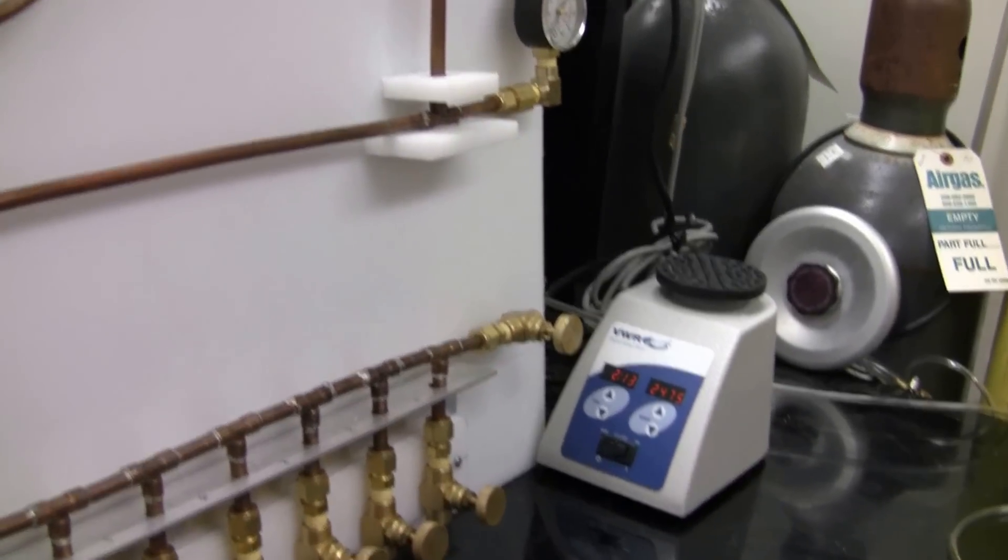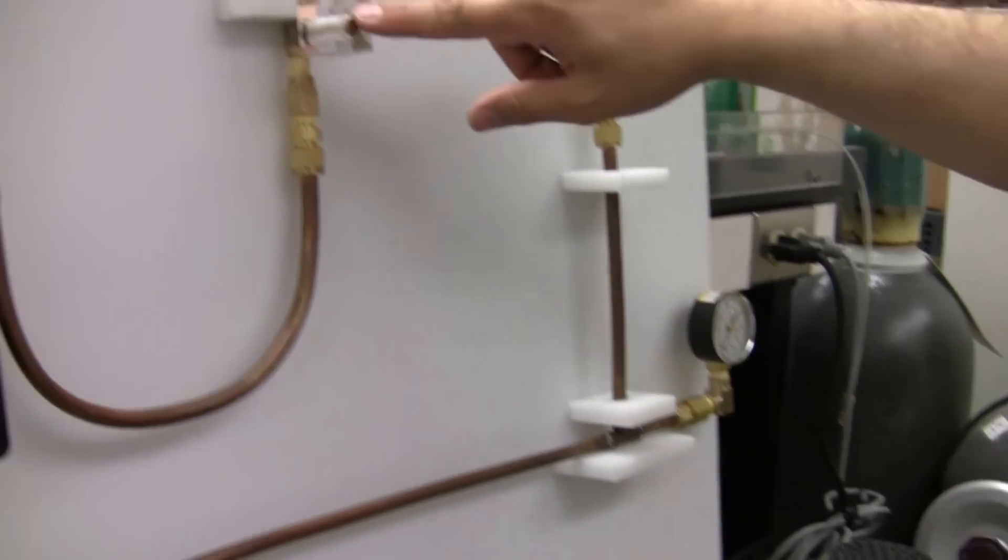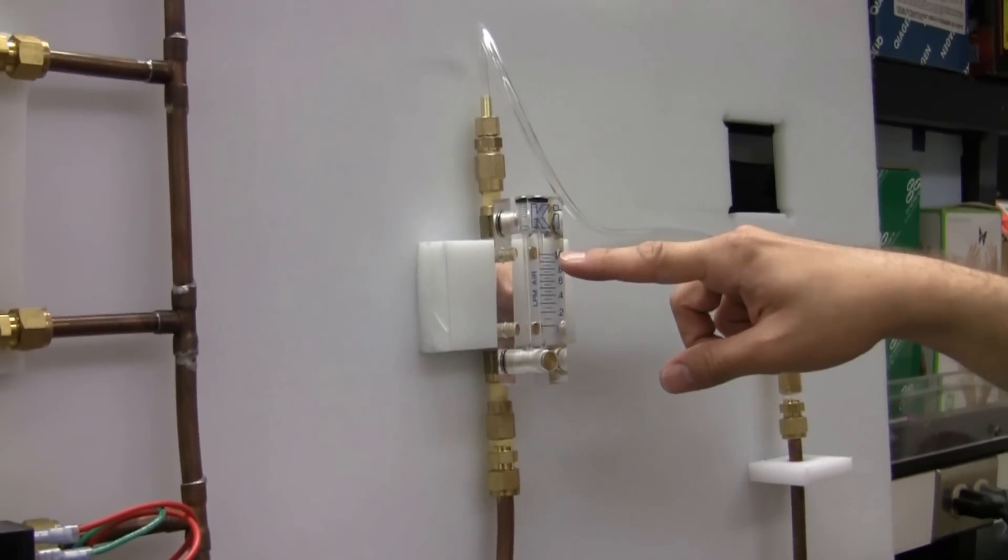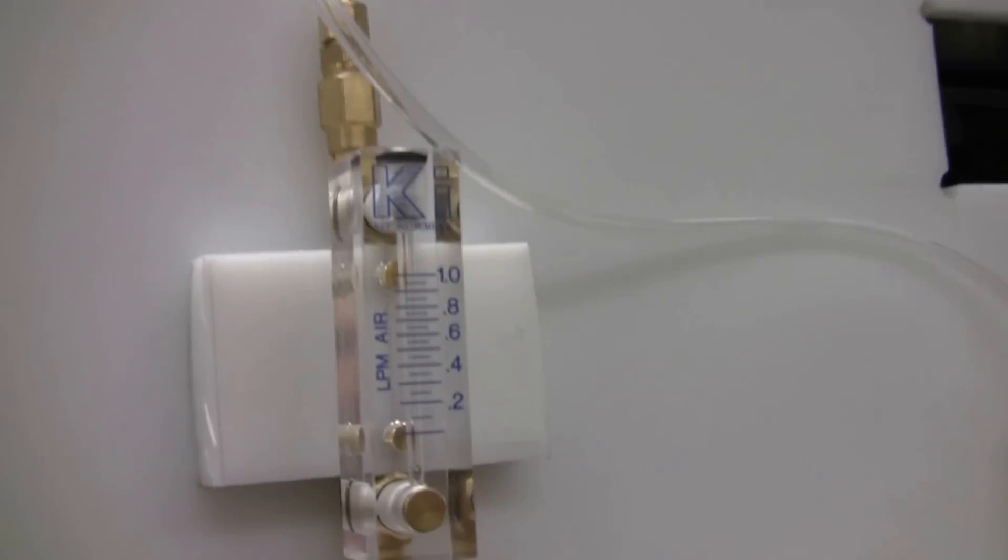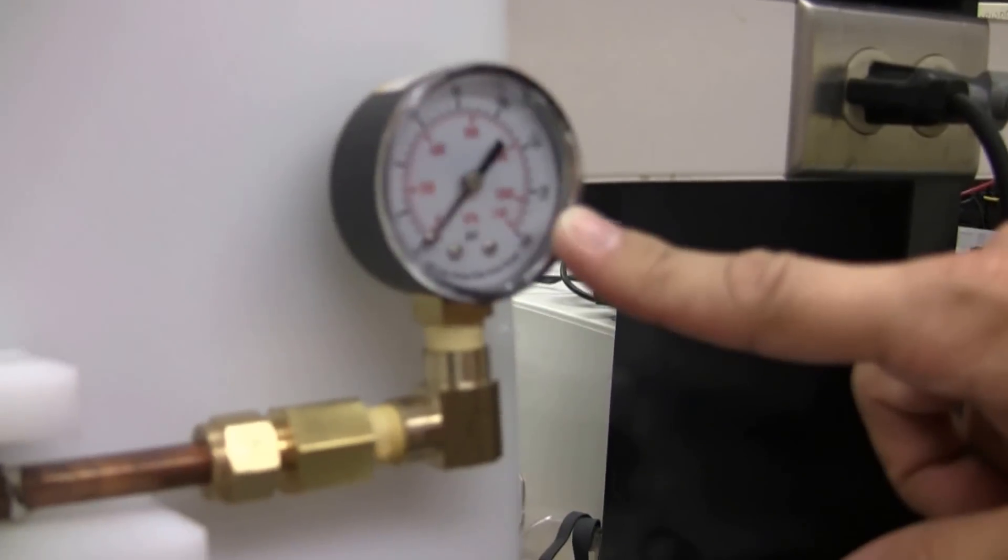In addition, the manifold has a flow meter up to one liter per minute. It has a manometer that measures the pressure in the destination.